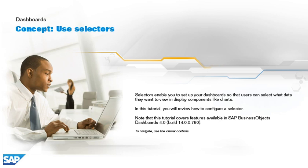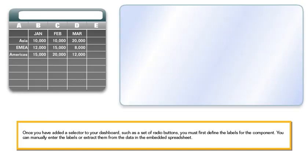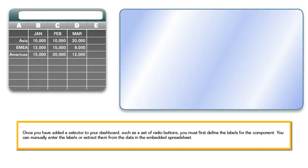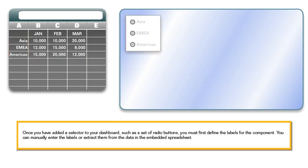To navigate, use the viewer controls. Once you have added a selector to your dashboard, such as a set of radio buttons, you must first define the labels for the component. You can manually enter the labels or extract them from the data in the embedded spreadsheet.